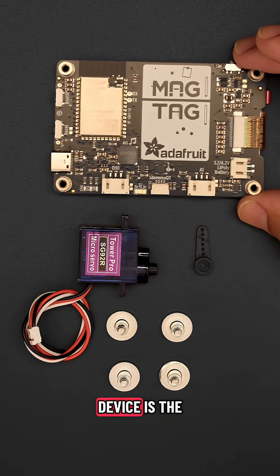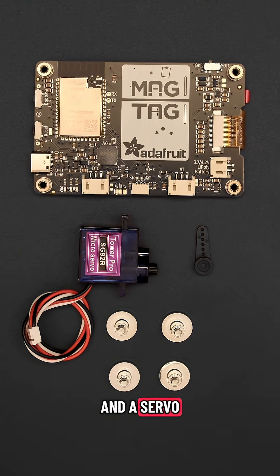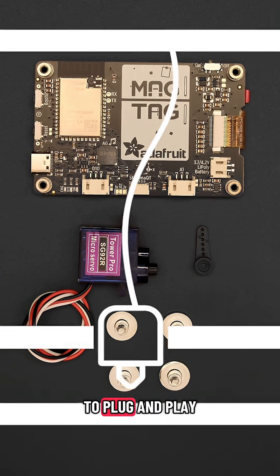All you'll need to build the device is the Adafruit MagTag and a servo with a 3-pin JST cable, making it easy to plug and play.